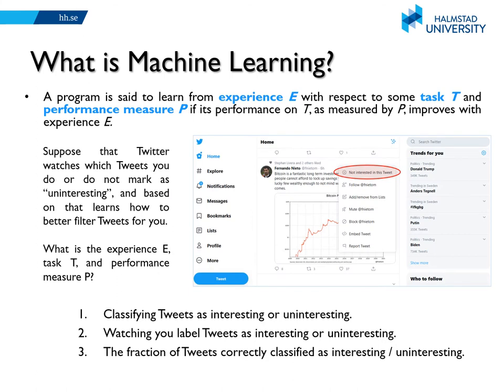A more commonly used definition is the following: suppose you want to do some task T, and you have access to some experience E and some performance measure P. Then a program is said to learn from experience E with respect to task T and performance measure P if its performance on task T, as measured by P, improves with experience. For example, suppose you are on Twitter and it watches which tweets you do or do not mark as uninteresting, and based on that it learns to better filter tweets for you.